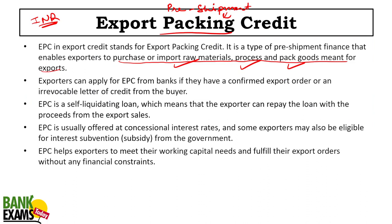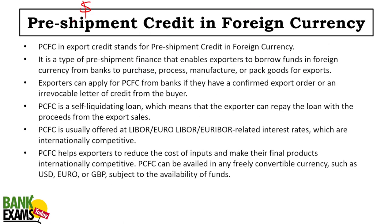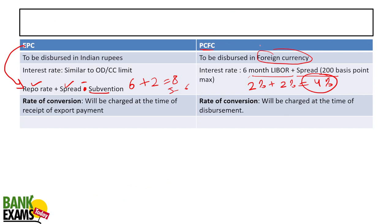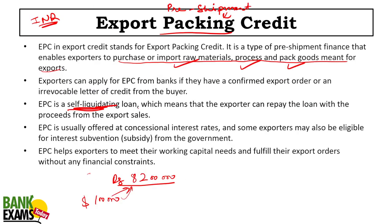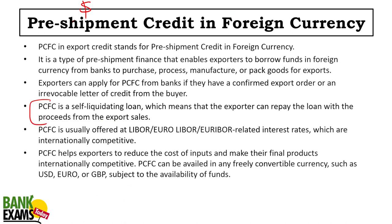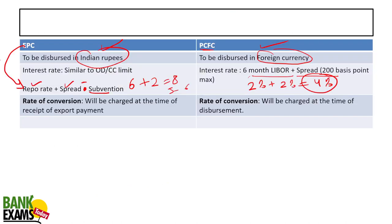In case of EPC, you get your loan in Indian rupees. So if you ask for $100,000, the bank converts it — say 82 lakh rupees — and credits your account. Conversion charges are applied at the time of disbursement. Both EPC and PCFC are self-liquidating, meaning the exporter can repay the loan with the proceeds from export sales.